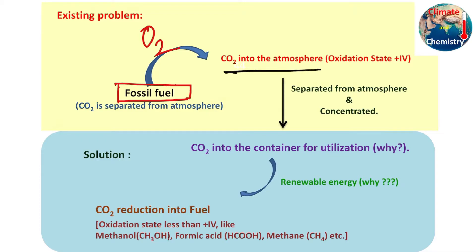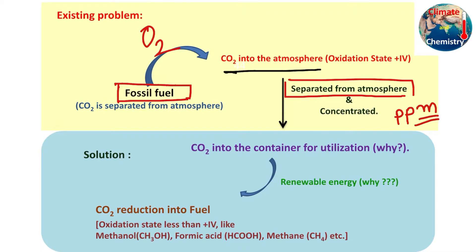This carbon dioxide should be separated from the atmosphere and concentrated, because global warming and climate change are happening because of excess CO2 in the atmosphere — I repeat, excess CO2. The concentration of carbon dioxide in the atmosphere is at the ppm level, so it is very difficult to chemically convert it into some other species. Concentration of this carbon dioxide is essential. Trees are very good for this process because they can absorb ppm-level carbon dioxide and convert it into useful chemicals — that's why planting more trees is the easiest option for reducing global warming.